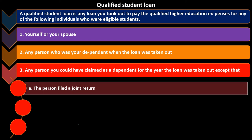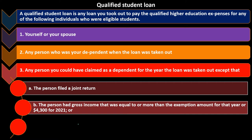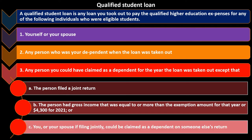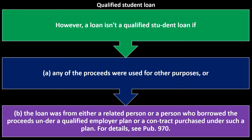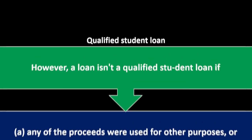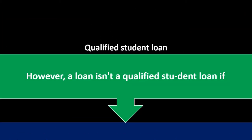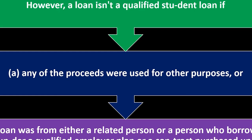The third case has some gray area — exceptions apply if: (a) the person filed a joint return, (b) the person had gross income equal to or more than the exemption amount for that year, approximately $4,300, or (c) you or your spouse, if filing jointly, could be claimed as a dependent on someone else's return.